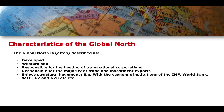This structural hegemony doesn't just exist in economic institutions. You can also look at the ability of the global North to hold significant power in political and security governance — for example, the UN Security Council, where the five permanent members are mainly global North countries: the US, France, the United Kingdom, and the Russian Federation. Countries like Russia and China, while perceptively part of the global South, present complications — China being the second largest economy in the world implies a certain divide being crossed.